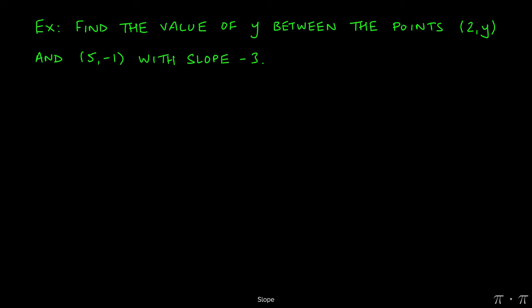In this question we're asked to find the value of y between the points (2, y) and (5, -1) so that the slope is -3.